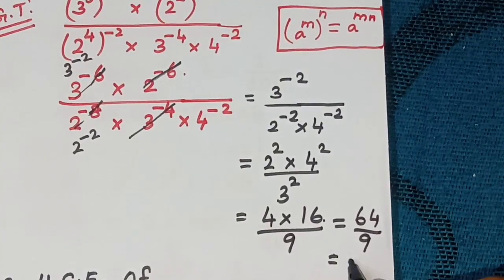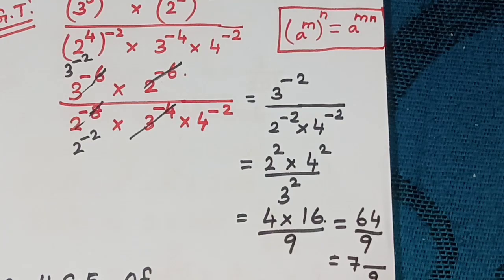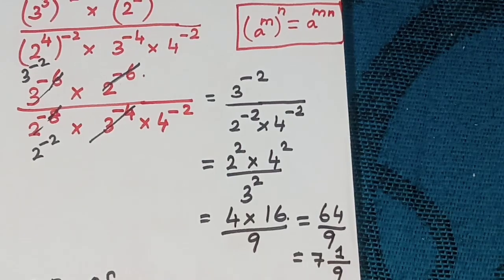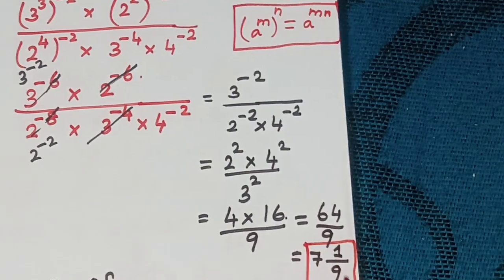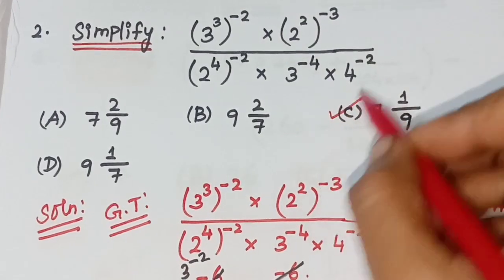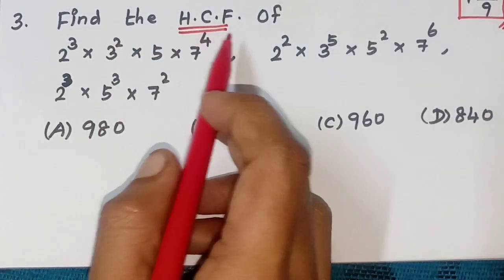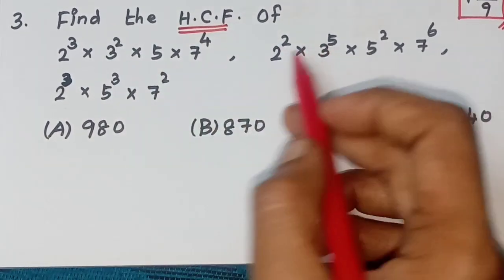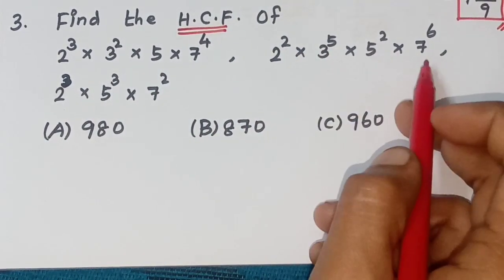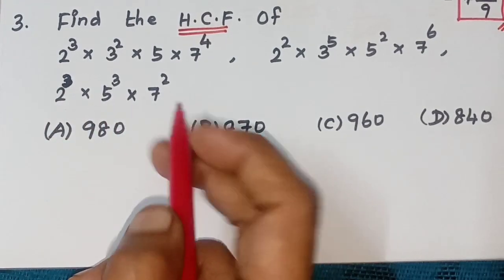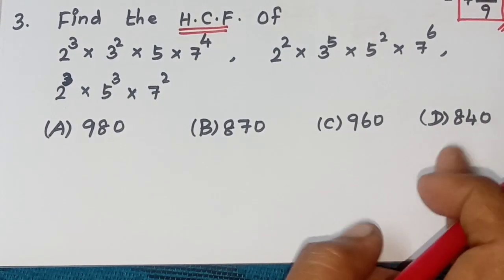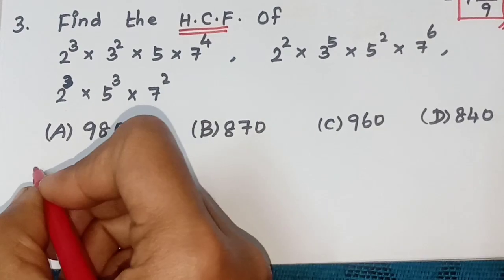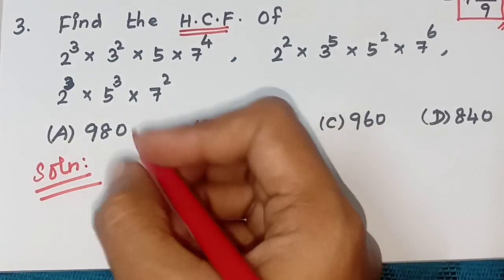As a mixed fraction: 64 ÷ 9 — 7 × 9 = 63, remainder 1 — so the answer is 7 1/9, option C. Third question: Find the HCF of 2³ × 3² × 5 × 7⁴, 2² × 3⁵ × 5² × 7⁶, and 2³ × 5³ × 7². Options: A) 980, B) 870, C) 960, D) 840.